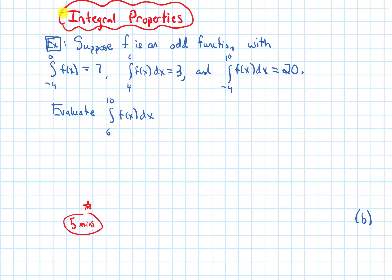In this discussion video, we'll do some practice problems involving integral properties. The first example says: suppose f is an odd function with the integral from negative 4 to 0 of f(x) dx equals 7, the integral from 4 to 6 of f(x) dx equals 3, and the integral from negative 4 to 10 of our function equals 20. We want to evaluate the integral from 6 to 10.